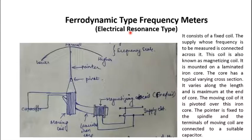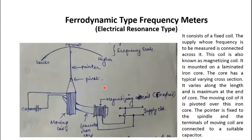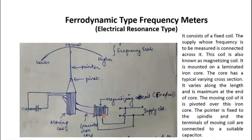The next instrument for frequency measurement is the ferrodynamic type frequency meter. Ferrodynamic frequency meters are an adaptation over the conventional electrodynamometer type instrument. They have two windings: one fixed coil and one moving coil. The fixed coil has its two terminals connected to the supply whose frequency is to be measured, and it has an extended core. In the magnetic vicinity of that core, a moving coil is placed which is connected with a capacitor.